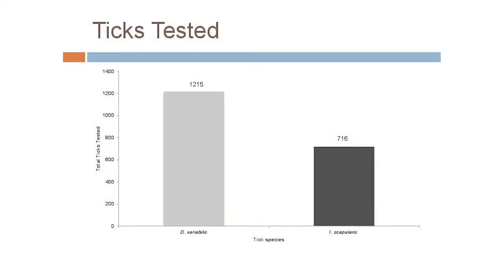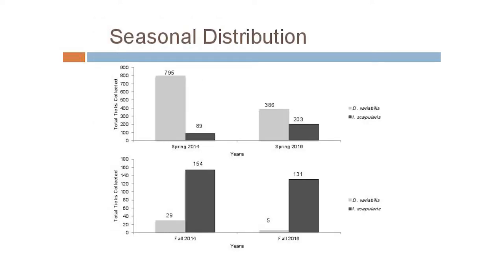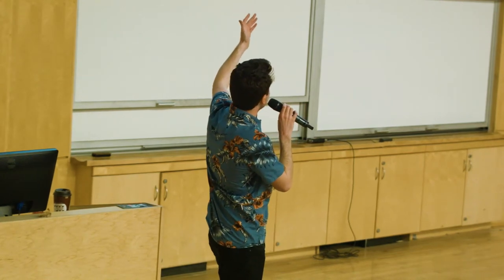Since 2012, we've tested roughly under 2,000 ticks — 1,215 have been Dermocenter variablis and 716 have been Exotus scapularis. Before any genetics work, we looked at their seasonal distributions and found they're almost inversely proportionate to each other: Dermocenter species are much more prevalent in the spring months, while Exotus are much more prevalent in the fall. This is important because a misconception could develop — seeing low Exotus prevalence in the spring, someone might think tick-based disease isn't a concern, which would be wrong.